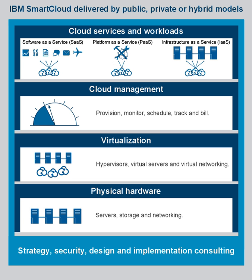The IBM SmartCloud brand includes Infrastructure as a Service, Software as a Service, and Platform as a Service offered through public, private, and hybrid cloud delivery models. IBM places these offerings under three umbrellas: SmartCloud Foundation, SmartCloud Services, and SmartCloud Solutions. SmartCloud Foundation consists of the infrastructure, hardware, provisioning, management, integration, and security that serve as the underpinnings of a private or hybrid cloud.